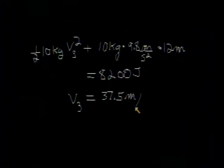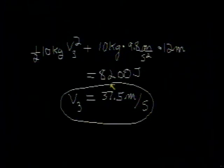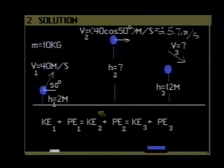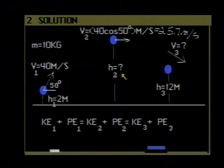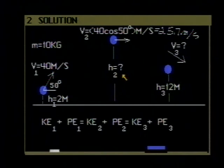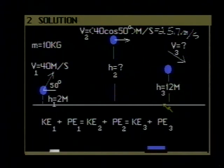That is the velocity of the stone as it goes over the castle wall. We have found that the maximum height of the stone is 50 meters. That's the solution to problem number two. Let's move on now to problem number three.